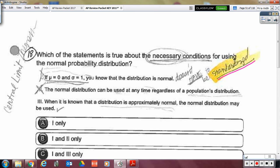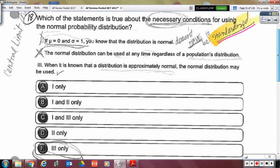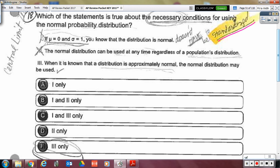All right. Now, on this one, it is not necessary that the mean be zero and the standard deviation be one. You can have a normal curve that is not normal around zero and one. That's called a standardized normal curve. It doesn't have to be a standardized normal curve. And number three is the true one.